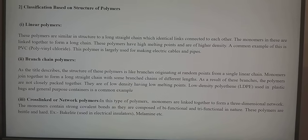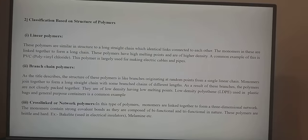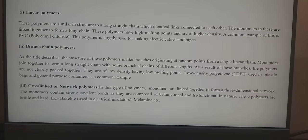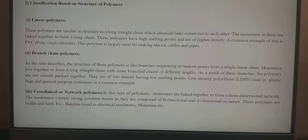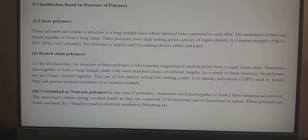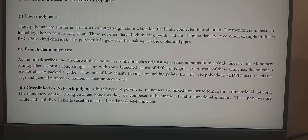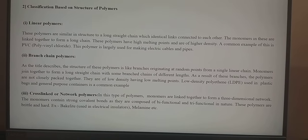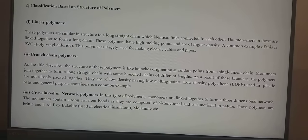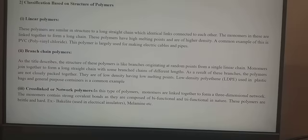Branched polymers are structures which have branches that originate at random points. From a single linear chain, monomers join together to form a long straight chain with branch chains of different lengths. As a result of these branches, the polymer chains are not closely packed together. They are of low density and have low melting points. A common example is low-density polythene, which is used in plastic bags and general purpose containers.